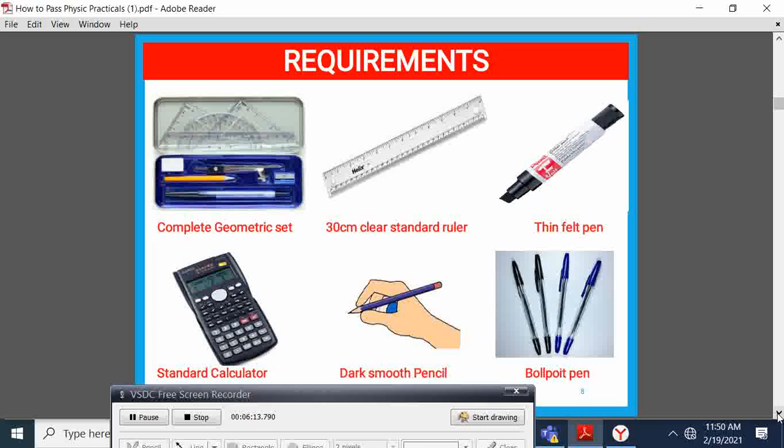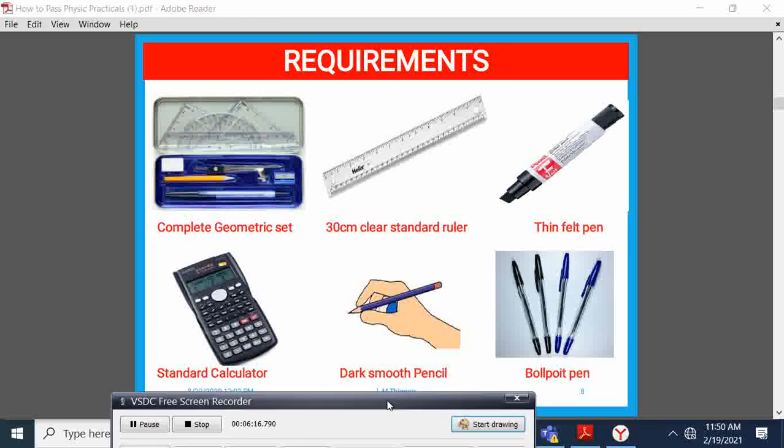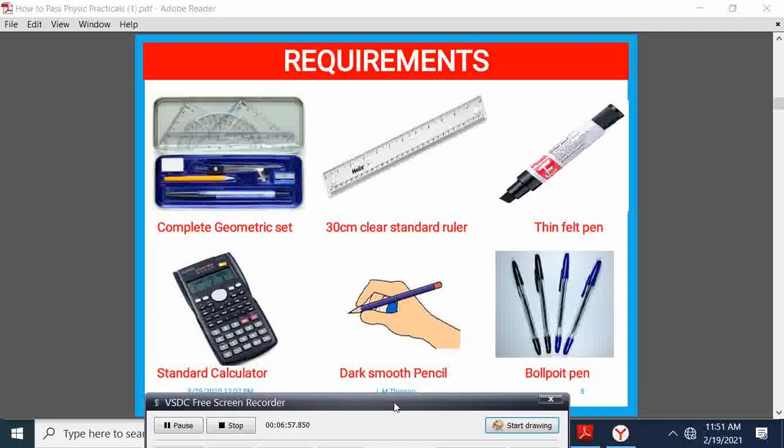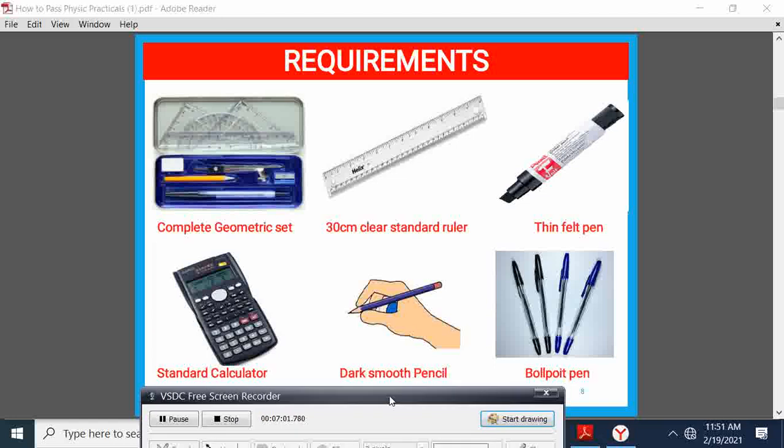The requirements that are needed in a practical include, but are not limited to, a complete geometrical set, a 30 cm clear standard ruler. The word standard and clear is important because if your meter or ruler is not clear, you may not be able to draw a fine graph. We have a thin felt pen, a dark smooth pencil, a standard calculator, and a ballpoint pen.